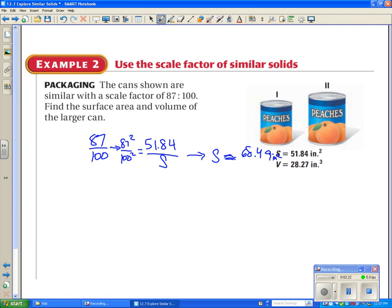And do the same thing for the volume, but instead of doing the squared, we do cubed. 87 cubed over 100 cubed. And this is equal to 28.27 inches cubed divided by some unknown volume. So we got 28.27 times 100 cubed divided by 87 cubed. And I get volume approximately equal to 42.93 inches cubed.